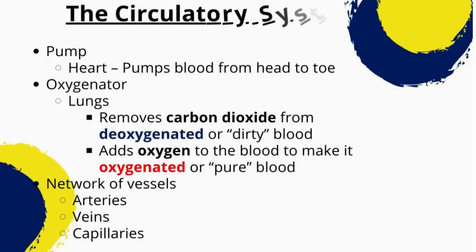The circulatory system consists of the heart, blood vessels, and blood. The heart pumps blood through the blood vessels, which include arteries, veins, and capillaries. The blood carries oxygen and nutrients to the cells and tissues, and waste products back to the heart for removal from the body. The lungs work as an oxygenator — removing carbon dioxide from deoxygenated blood and adding oxygen to make it oxygenated.